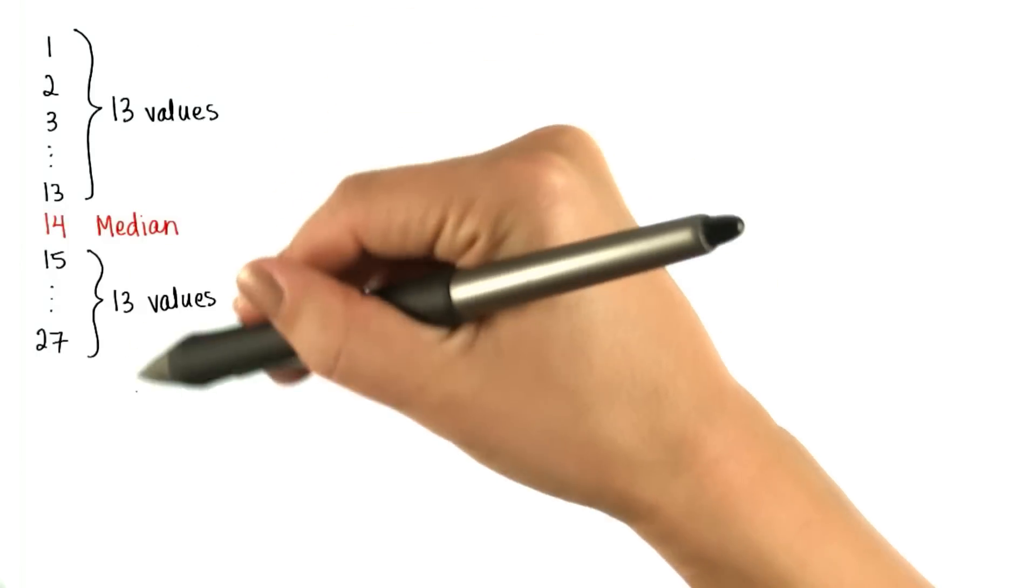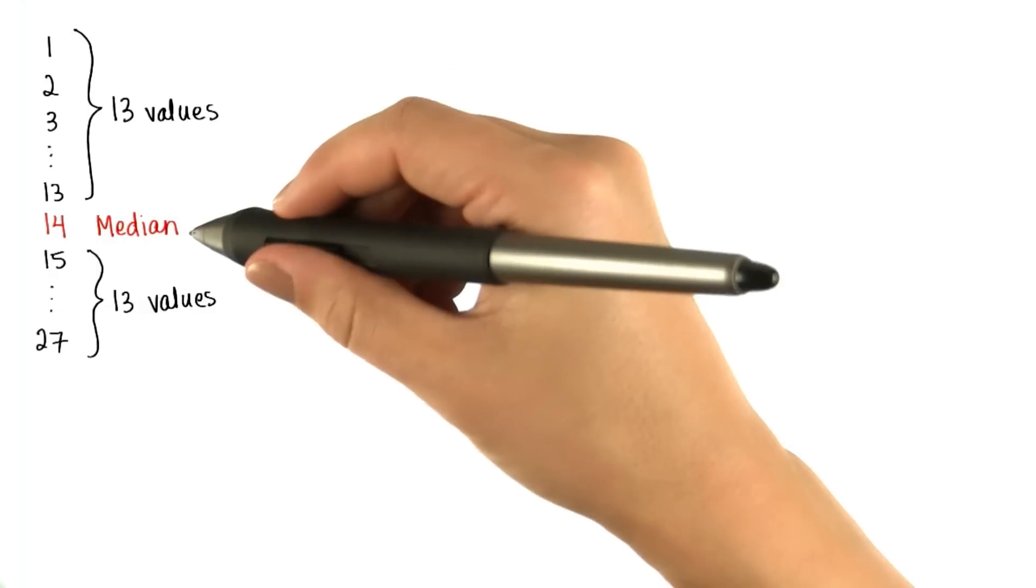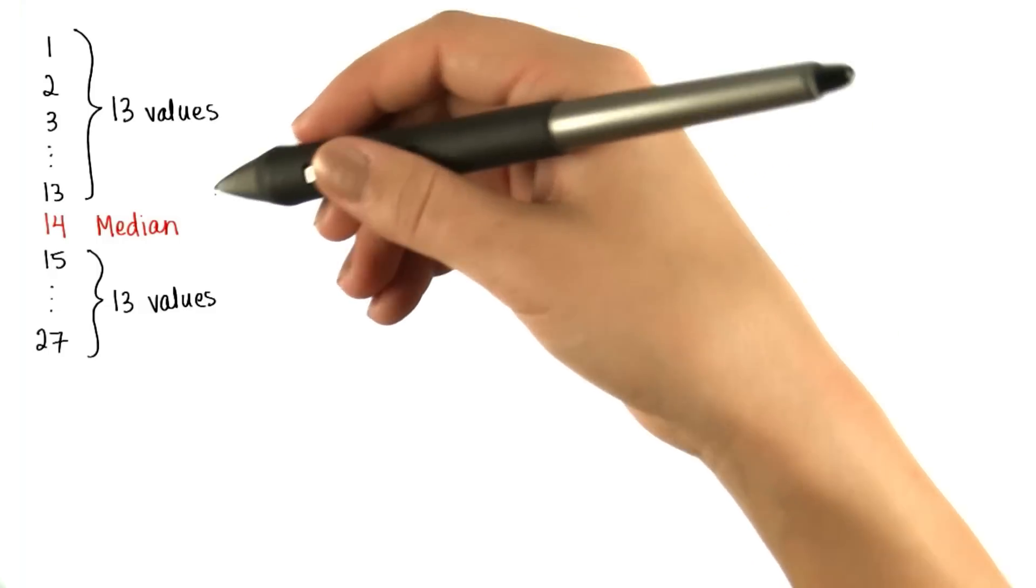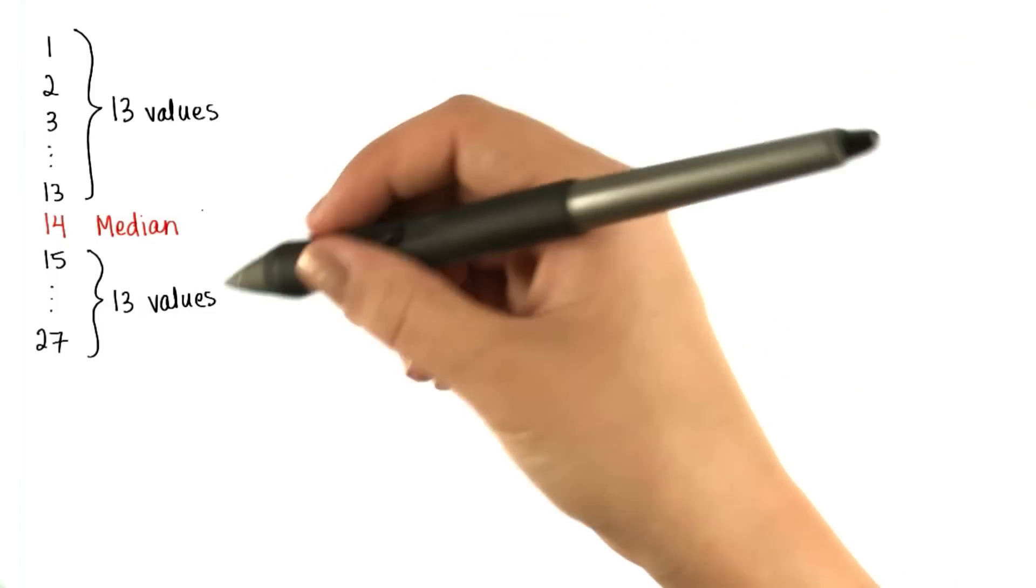After sorting our 27 data values, how did we know that the median was the 14th value, besides by simply counting? Is there a way we can describe the median value in symbols?